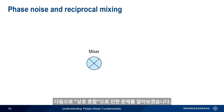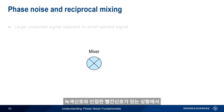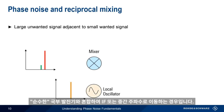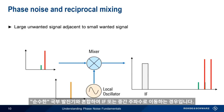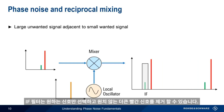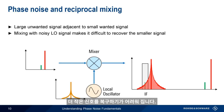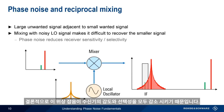Phase noise can also cause problems due to something called reciprocal mixing, which arises in situations where we have a small wanted signal — here the signal in green — and a large adjacent unwanted signal — here the signal in red. Mixing these signals with a relatively pure local oscillator, we can move the signals down to an IF, or intermediate frequency, for processing. The IF filter only selects the desired signal and rejects the larger unwanted signal. However, if our local oscillator has excessive amounts of phase noise, this will spread the energy from the adjacent unwanted signal into the IF filter, making it difficult or impossible to recover the smaller signal. Local oscillator phase noise should therefore be kept as low as possible, since this phase noise reduces both the sensitivity and selectivity of a receiver.